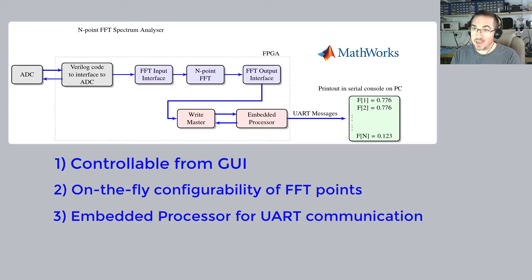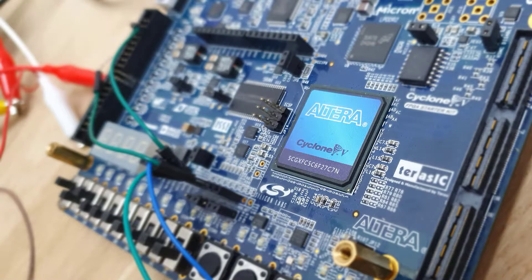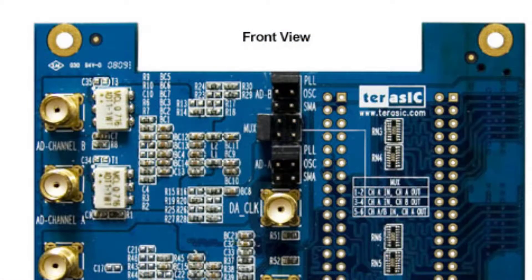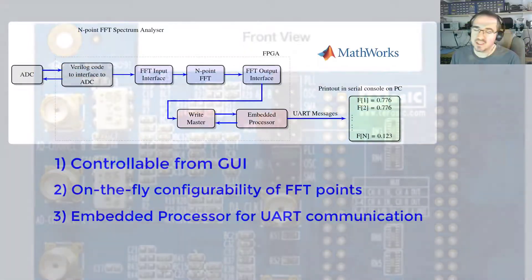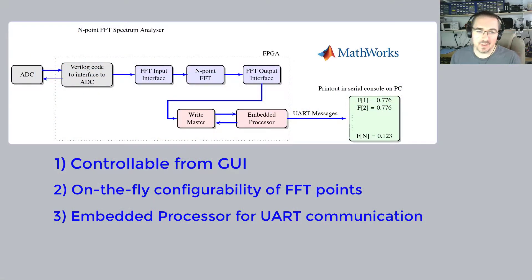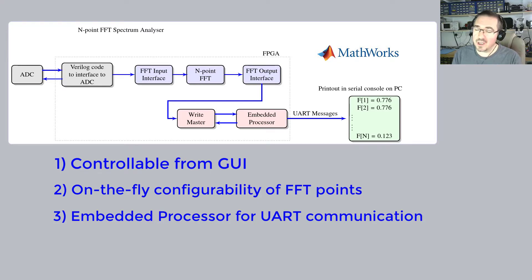The hardware I'll be using is the Cyclone 5 starter kit and the THDB ADA daughter board made by Terasic, which has a 65 mega-sample-per-second A-to-D converter. We'll also be using a UART interface to MATLAB. The first video will focus on the implementation of the FFT, since that's central to the whole project, and then we'll start building everything else around that. I hope you'll enjoy the process and learn something from it.